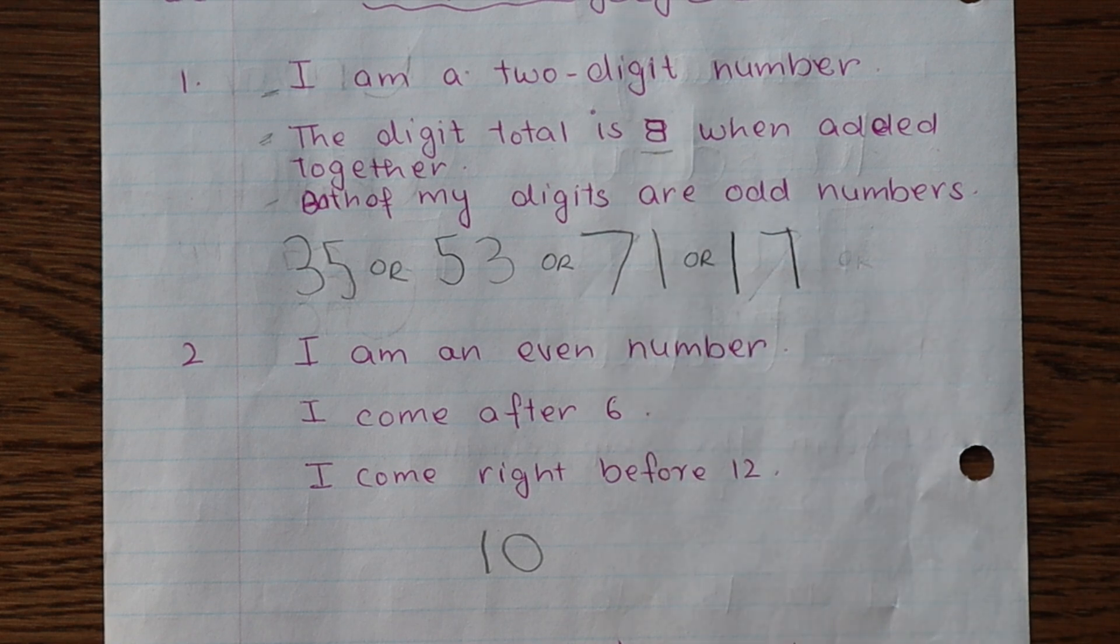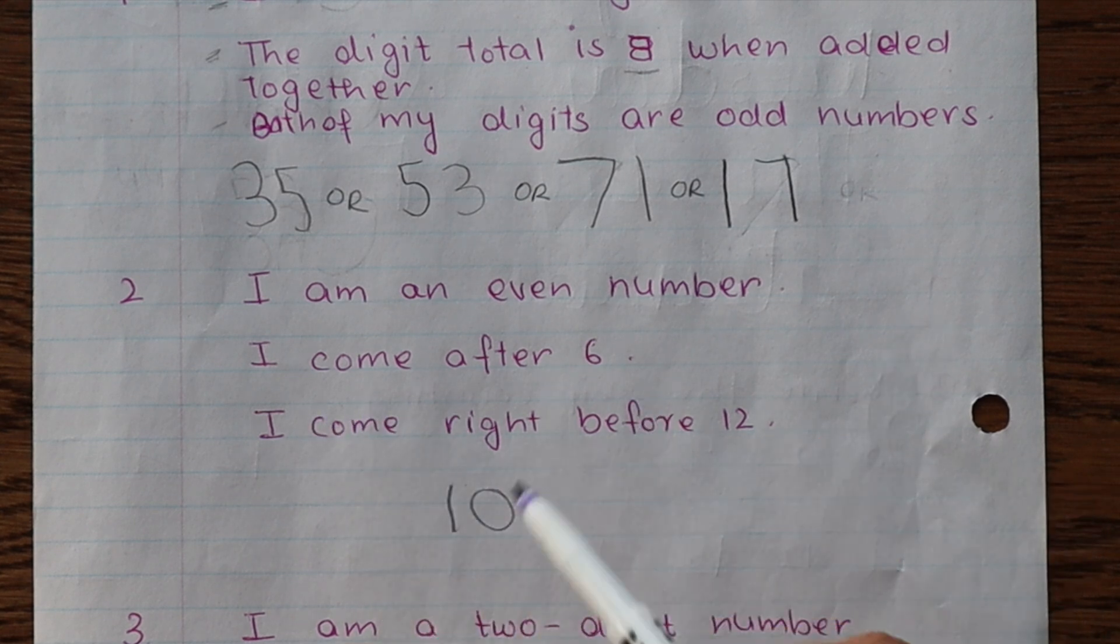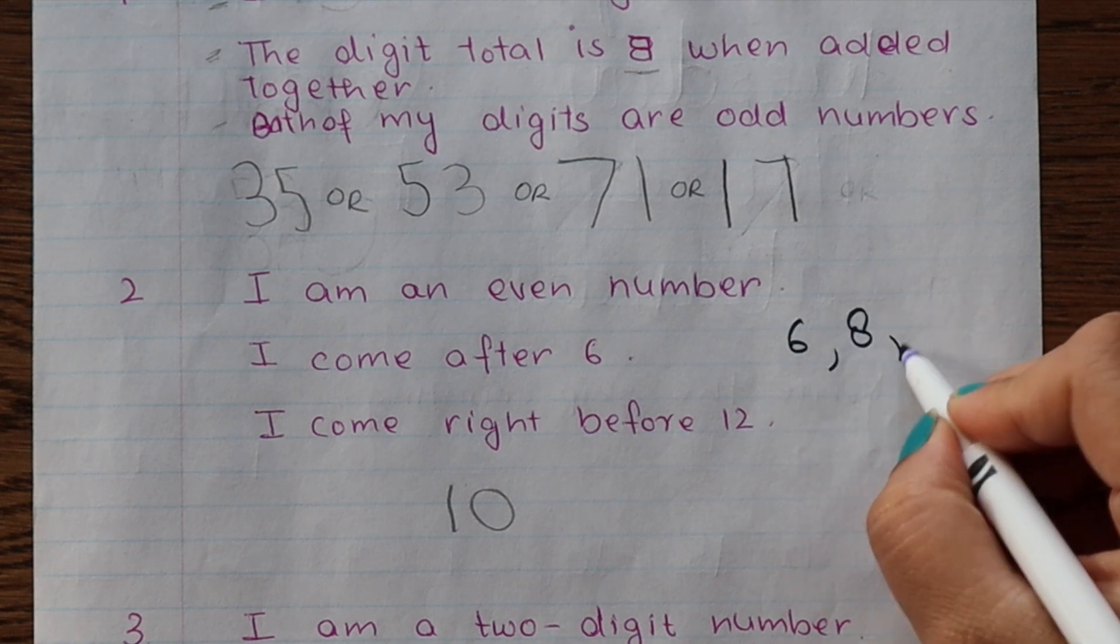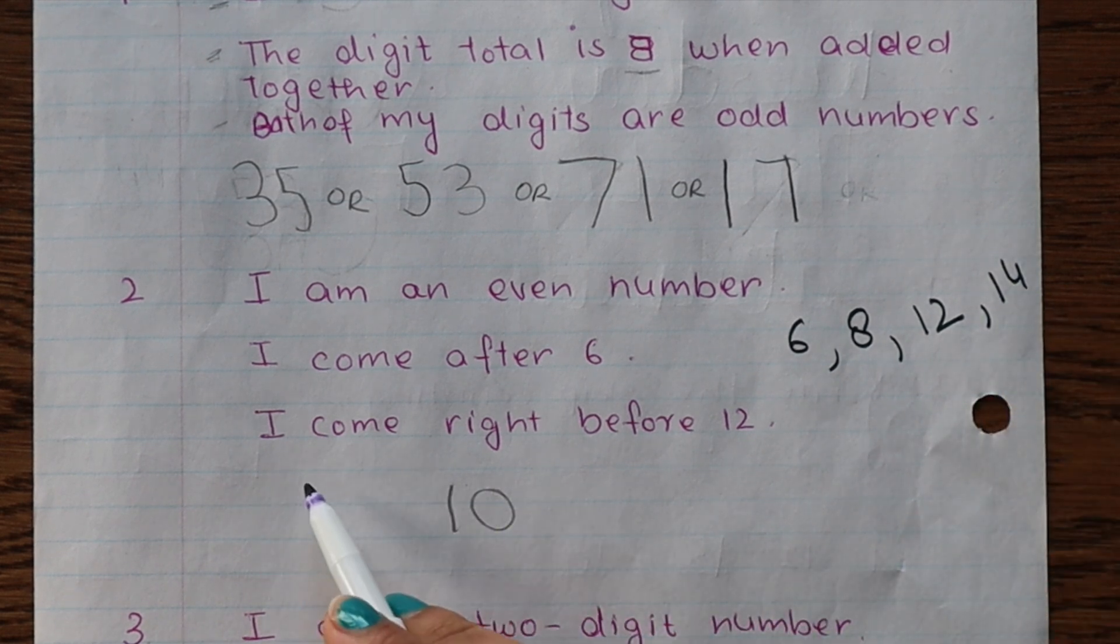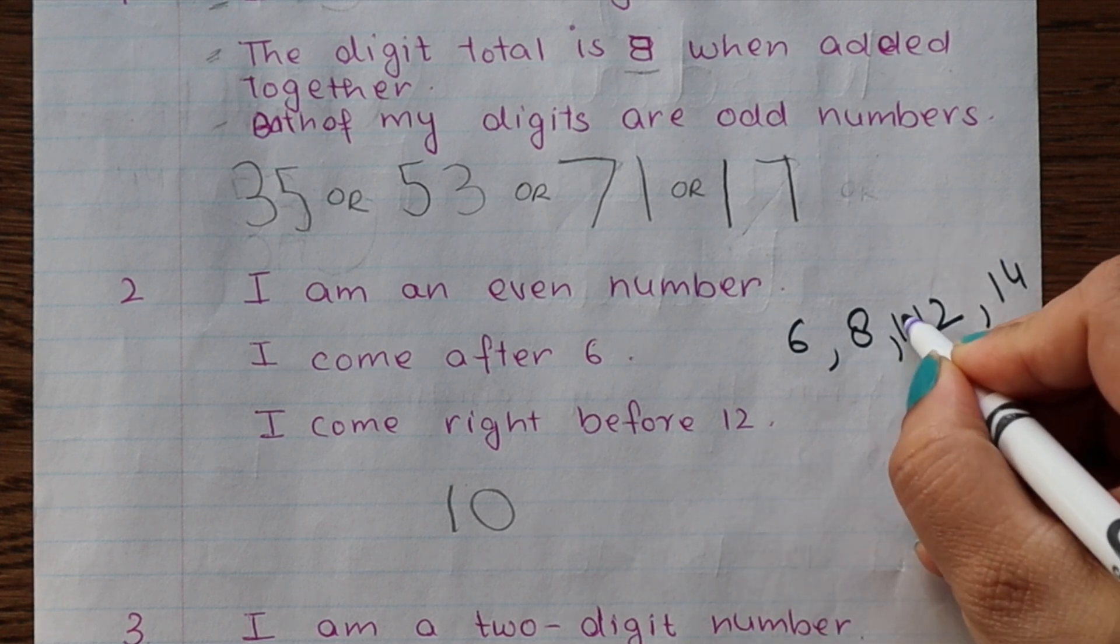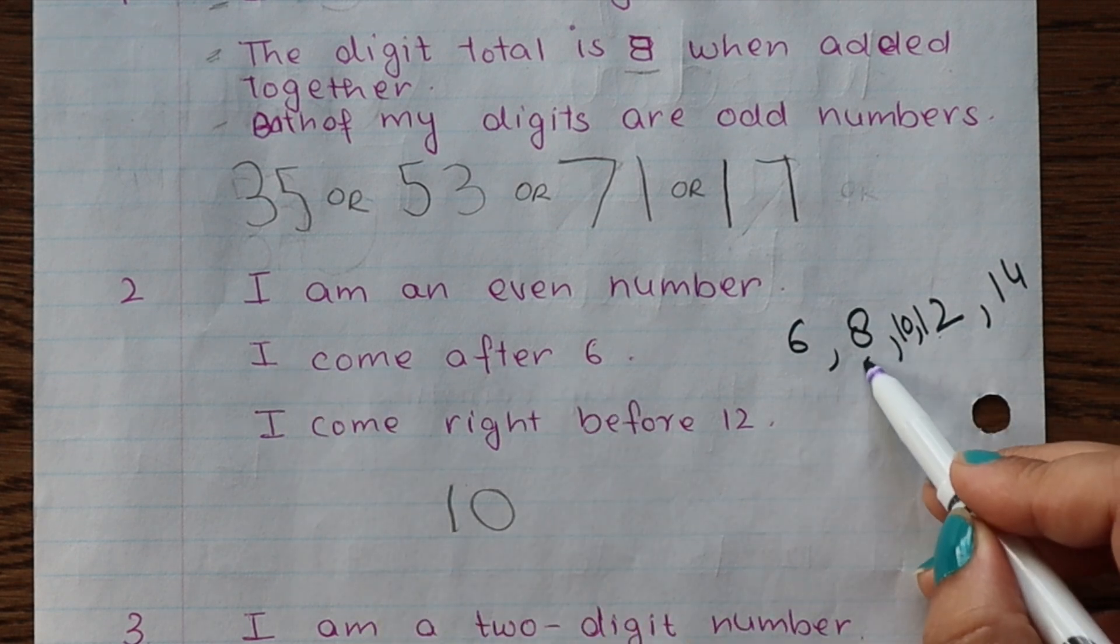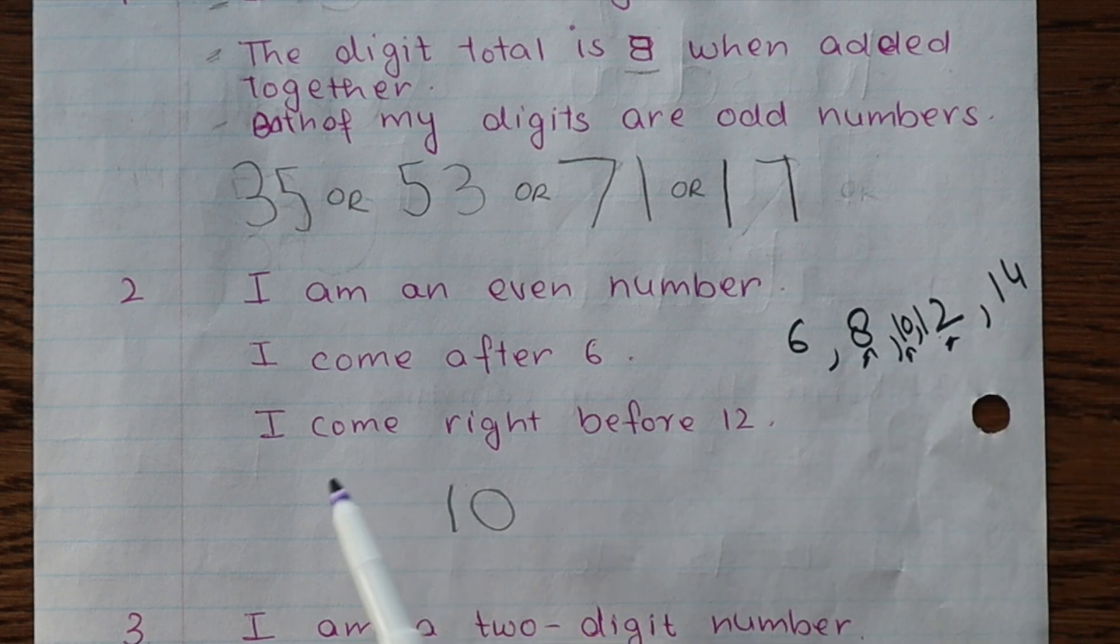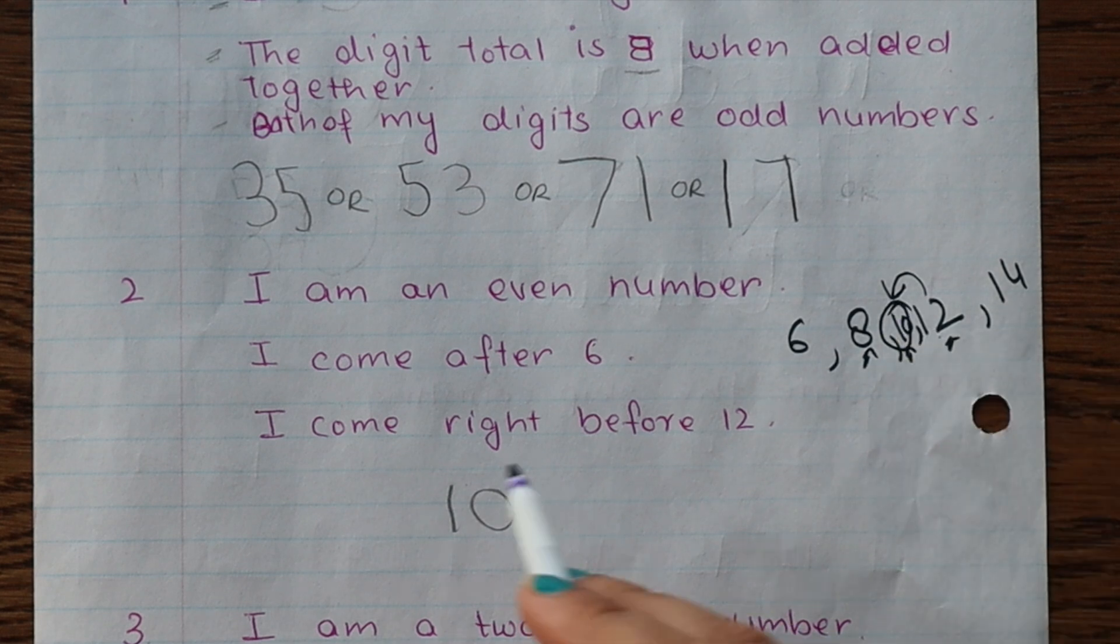So the first clue is it's an even number. Now the second is I come after 6, so which even number comes after 6? 8, then 12, then 14, and so on. Now the third clue is I come right before 12. So I come after 6, it can be 8, it can be 10, it can be 12, or it can be any number. But the third clue is I come right before 12, so what comes right before 12 is 10. So the answer is 10.